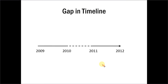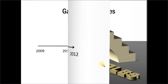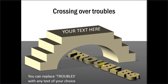Let me show you some example templates taken from our PowerPoint CEO packs, where we have used everyday objects to represent useful business concepts. The first example uses a simple everyday object — a bridge — to show the concept of crossing over troubles, and explains how we go about doing it.